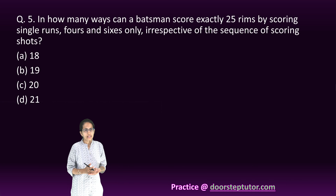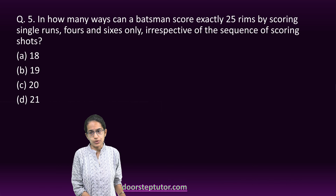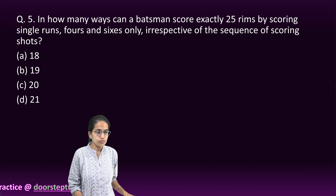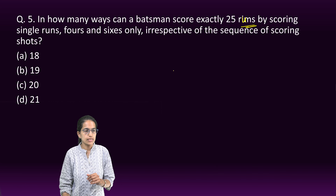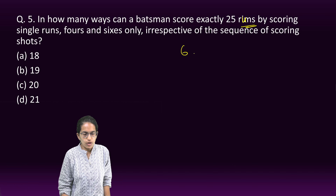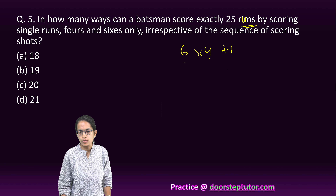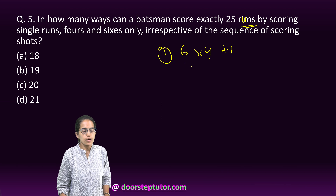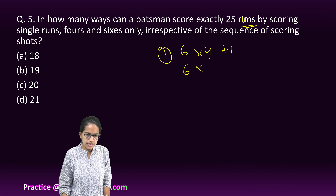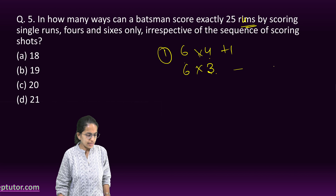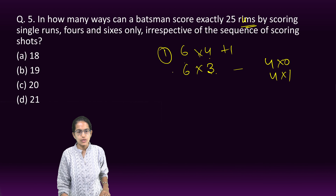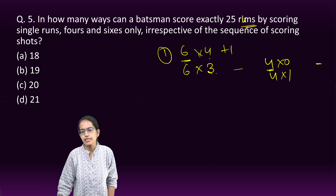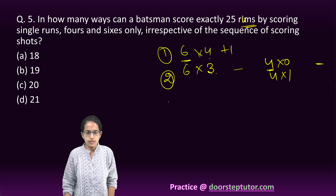The next question: in how many ways can a batsman score exactly 25 runs by singles, fours and sixes? The score could be 4×6 into 4 plus 1 — so that's one combination. Another combination would be 6×3, meaning scoring 6 three times, then filling the remaining with fours and ones. So with sixes, fours, and the remaining with ones, there are 2 ways in which it could be done.